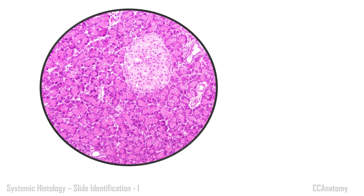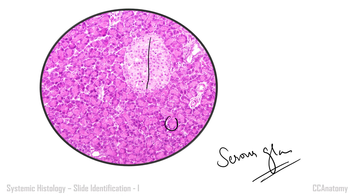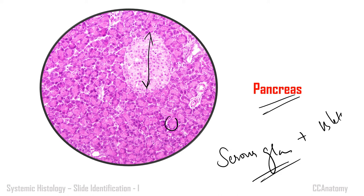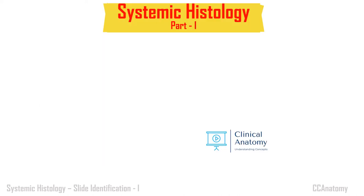If you've seen the first two videos, you can identify this as a serous gland. But in between, there is a different region — the islets of Langerhans — a group of cells located within the ocean of serous gland tissue. So this is the slide of pancreas: you have both the serous gland (exocrine portion) with groups of islets of Langerhans (endocrine portion).